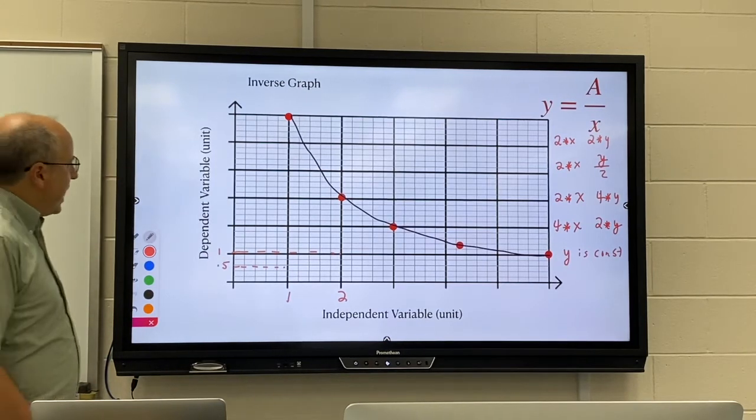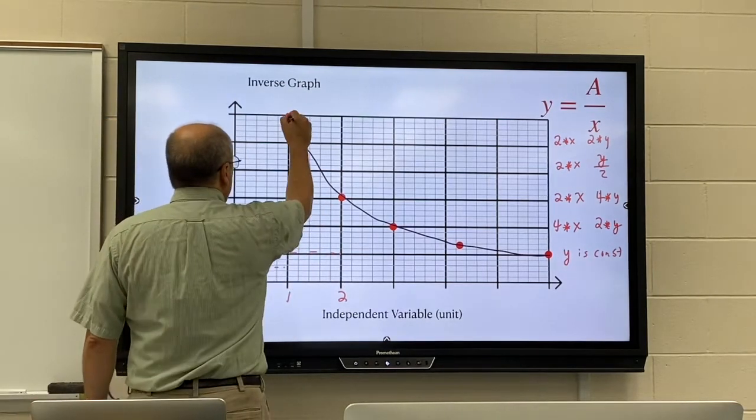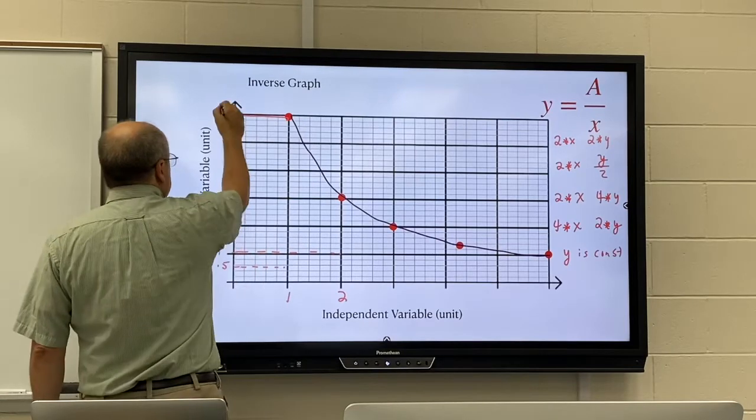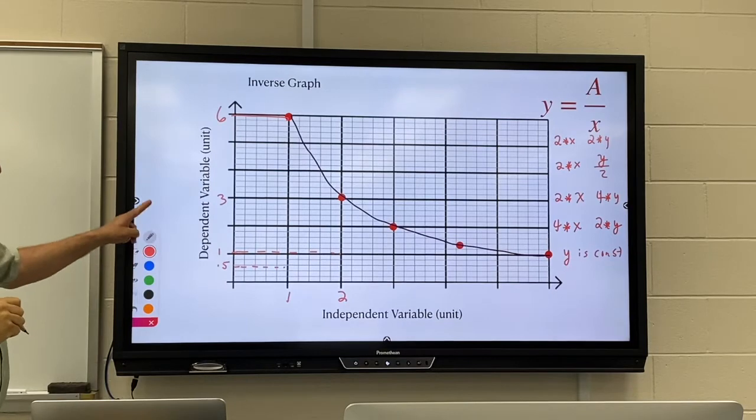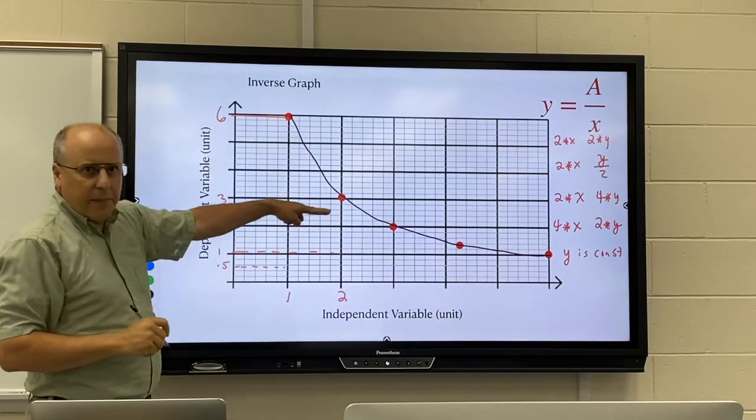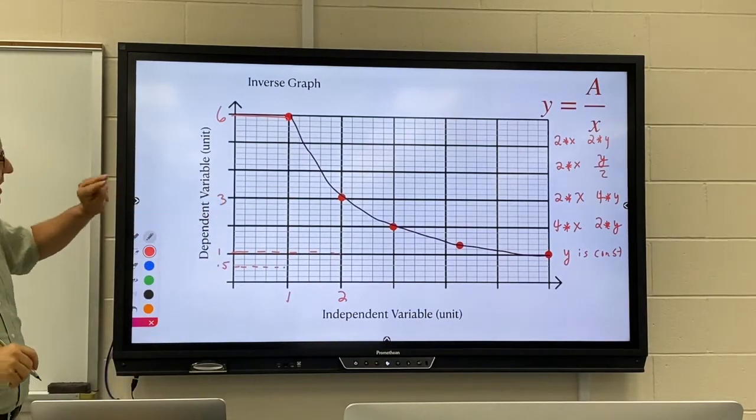For an inverse graph, when I go from one to two, I went from about six to about three. So when I doubled my X, I cut my Y in half. That's inverse.